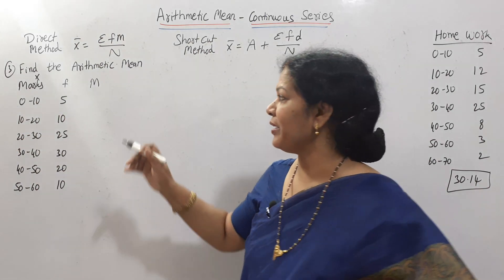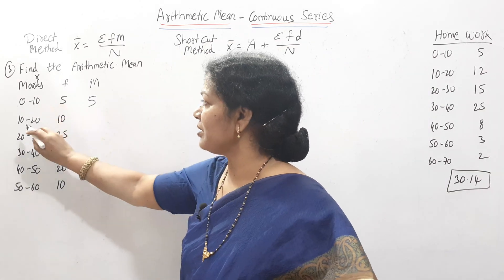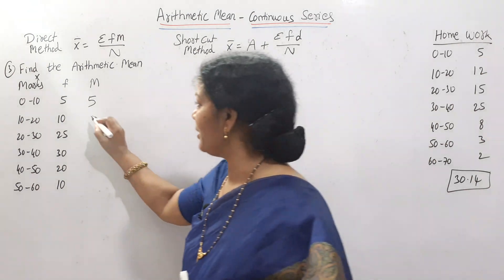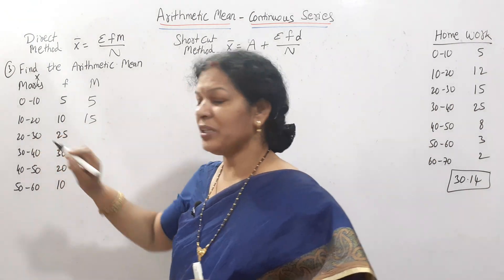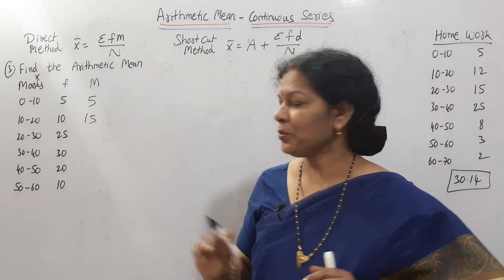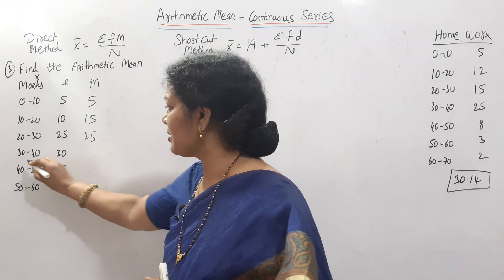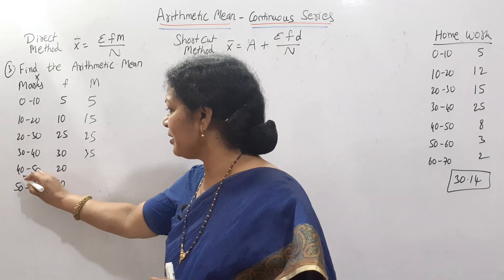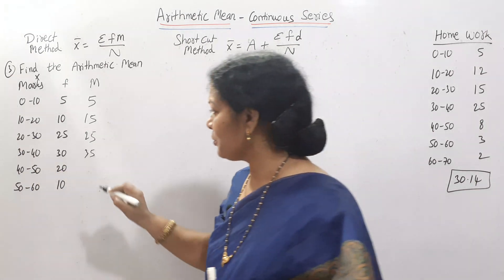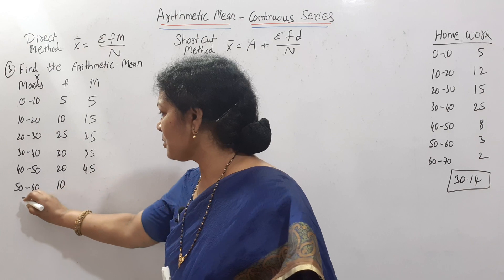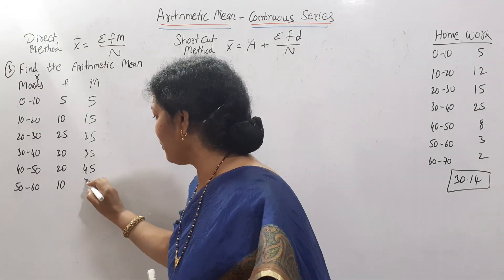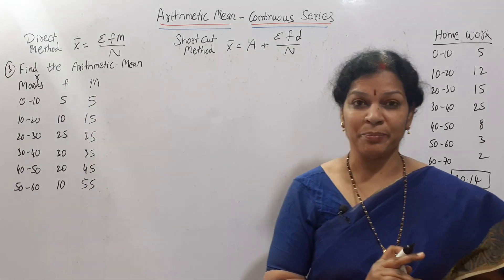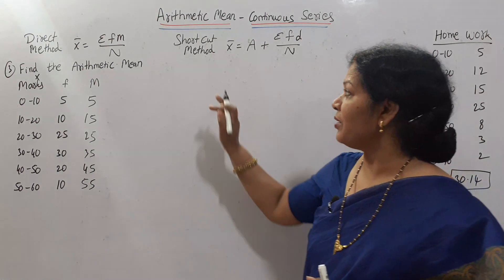The mid-value m is the average of each class. So 0 + 10 = 10, divided by 2 = 5. Then 10 + 20 = 30, divided by 2 = 15. In the same way, 70 divided by 2 = 35. Then 90 divided by 2 = 45. And 110 divided by 2 = 55. So you got the mid-point m for each class interval.